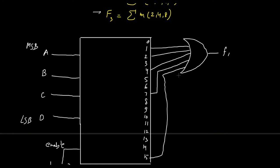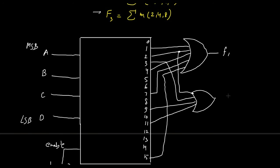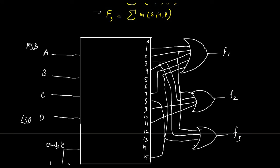For function f2, we use another OR gate with inputs connected to decoder outputs 2, 3, 9 and 11. For the third function f3, we use an OR gate connected to outputs 2, 4 and 8. In this way we can implement the multi-output combinational circuit using the 4-to-16 line decoder.